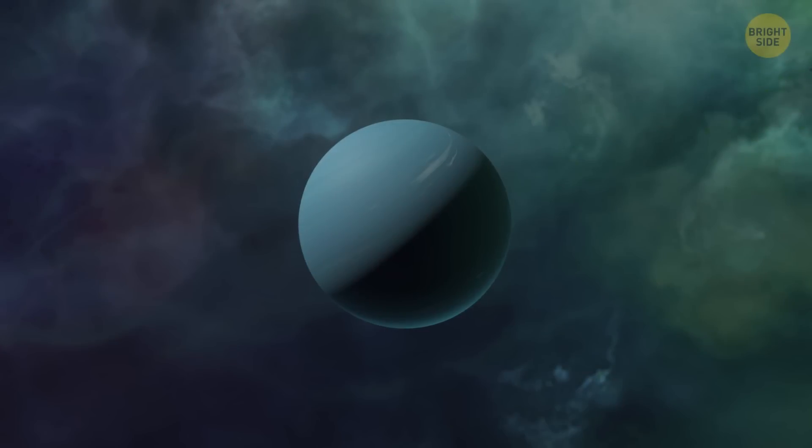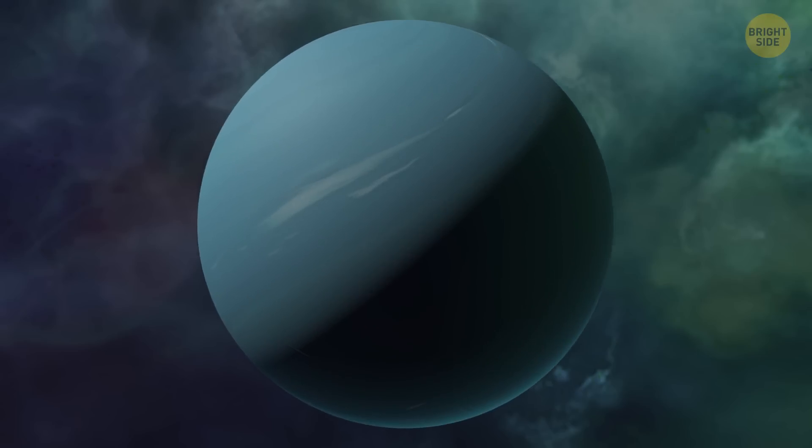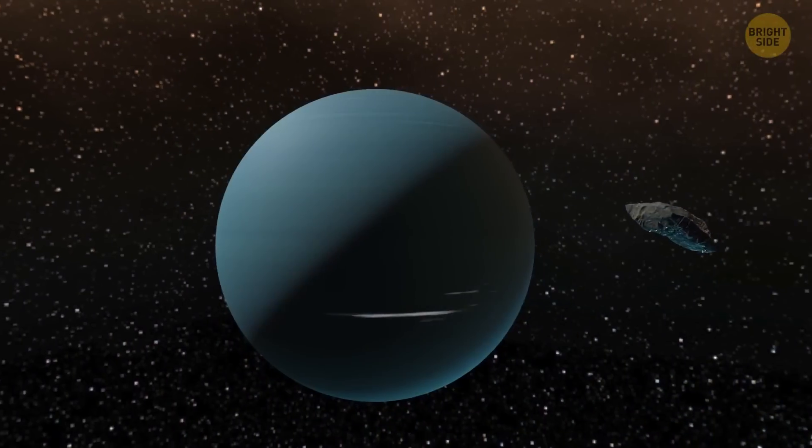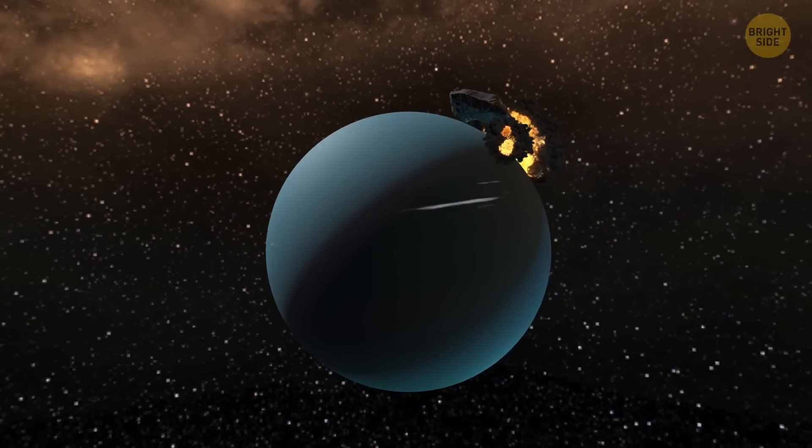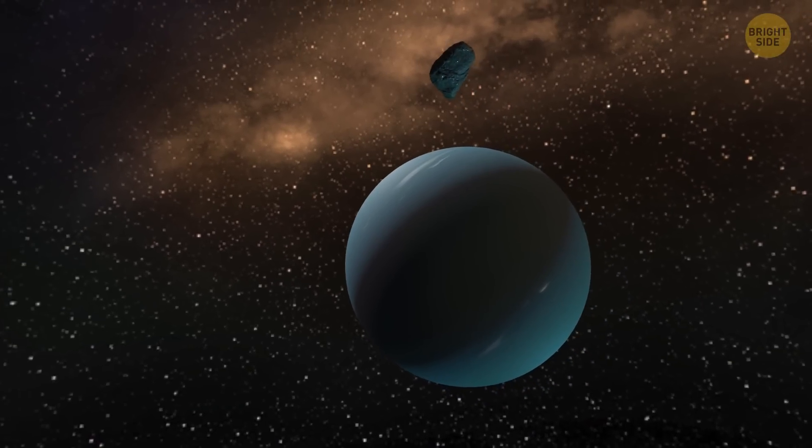The planet Uranus rotates on its side, and astronomers have no idea why the planet has chosen such an unusual position. The culprits could be ancient mega-powerful collisions, but so far it's just a theory. By the way, this is the only planet laying on its side.